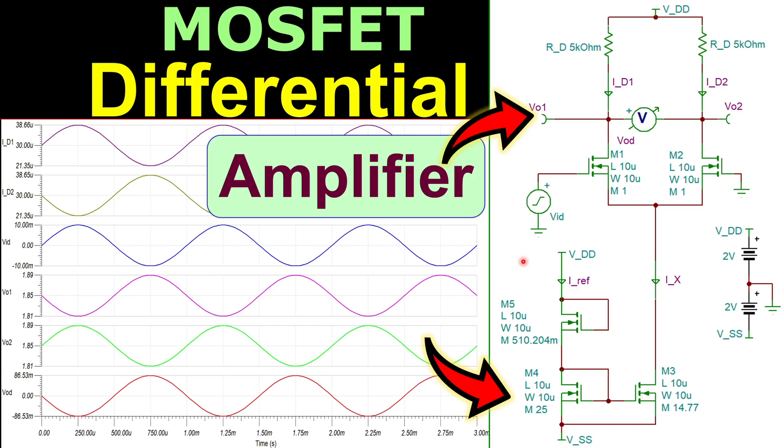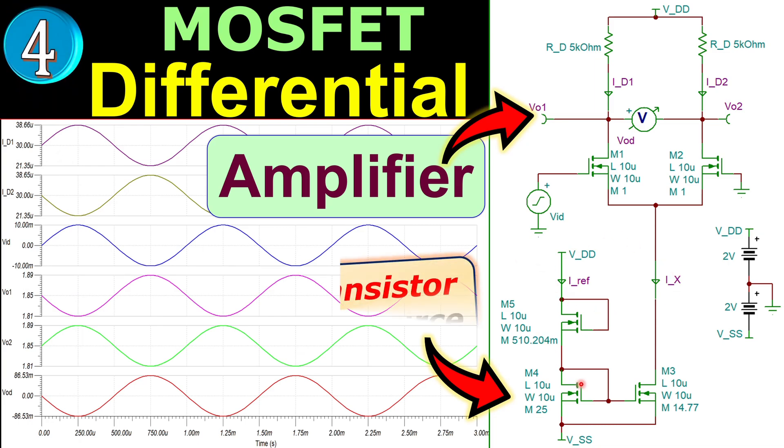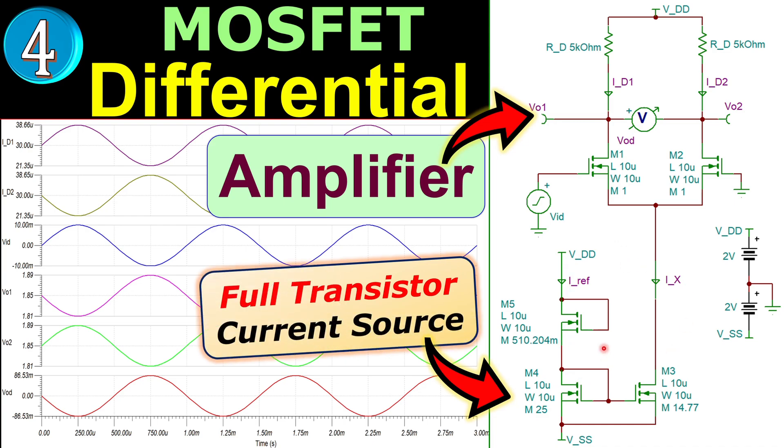Greetings and welcome to a new video about MOSFET differential amplifiers. This is example number 4. In this example, we will use the full transistor current source configuration to create the required tail current. We discussed this circuit in the other playlist about IC biasing, using transistors to create current sources. You can look in that playlist to learn more. I will use it here specifically for our differential amplifier design.